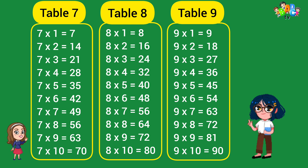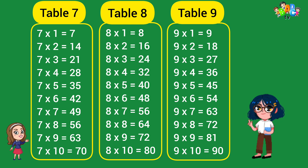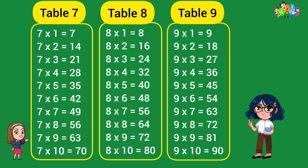Table of 9. 9-1 jar 9, 9-2 jar 18, 9-3 jar 27, 9-4 jar 36, 9-5 jar 45, 9-6 jar 54, 9-7 jar 63, 9-8 jar 72.